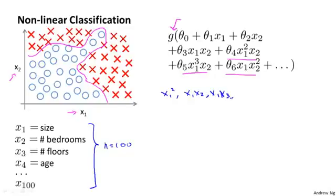And then you have x2 squared, x2 x3, and so on. And if you include just the second order terms, that is the terms that are a product of two of these terms, x1 times x1 and so on, then for the case of n equals 100, you end up with about 5,000 features.